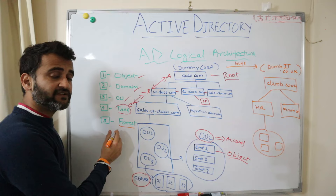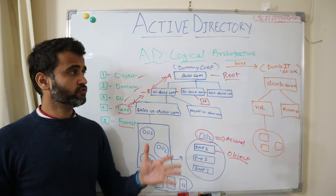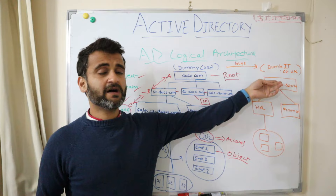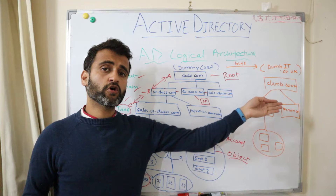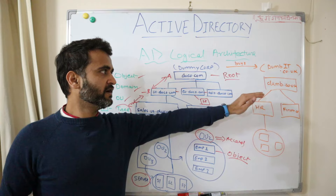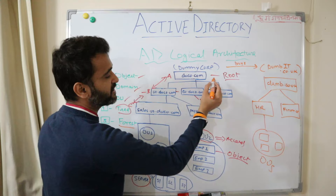As the name suggests, a Forest is a combination of multiple trees. It helps acquire new domains and merge them under a forest, so you can have multiple trees and multiple companies merging under a forest. For example, Dummy Corp is a company which buys a new company, dumbit.co.uk, with the domain dumb.co.uk. These are some funny names so that you can remember the concepts. It is a UK-based company with no branches, and under its parent domain it has HR and Finance as sub-domains, with respective objects under respective OUs.